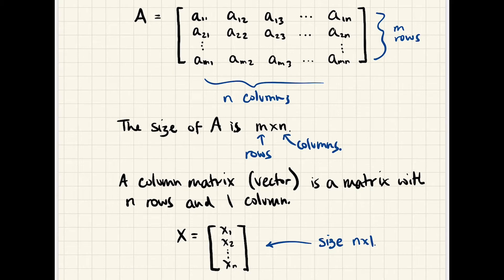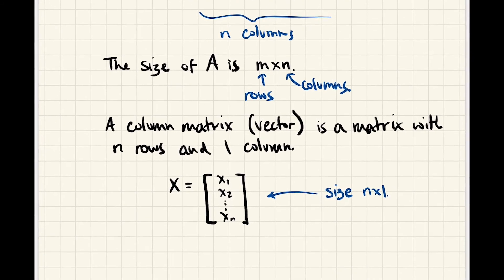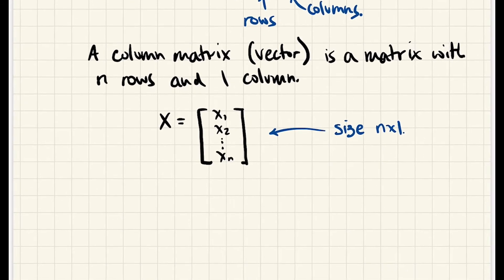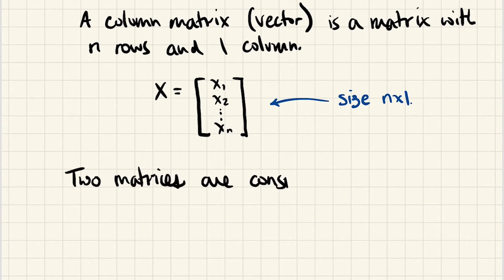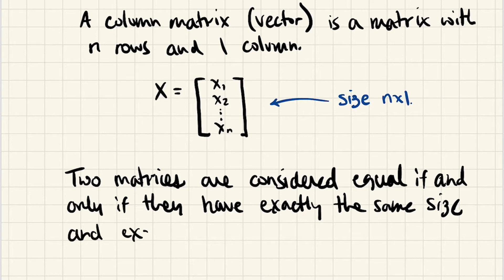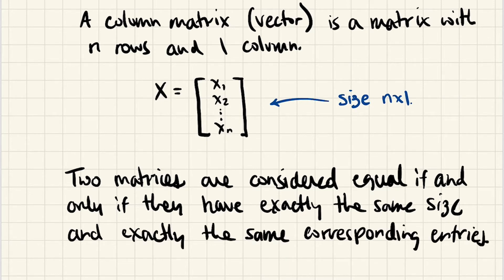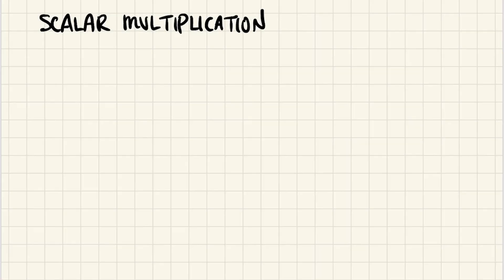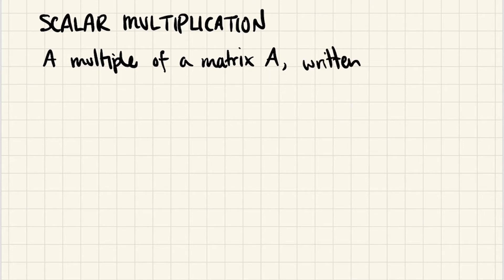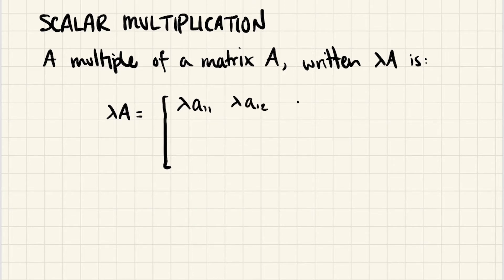Two matrices are equal if and only if they have exactly the same size and exactly the same corresponding entries. One of the simplest operations we can do with a matrix is multiplying it by a number, which is called scaling the matrix. The effect is that you're distributing the number into all the entries of the matrix — so here we're multiplying all entries individually by lambda: lambda·A₁₁, lambda·A₁₂, and so on.